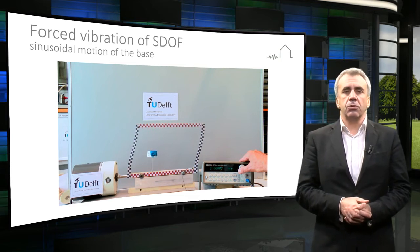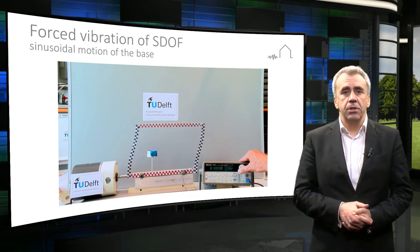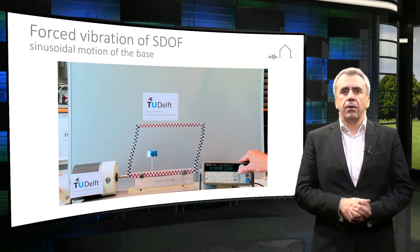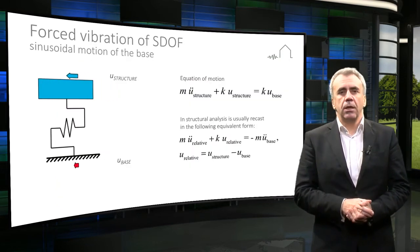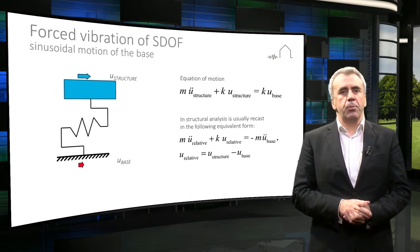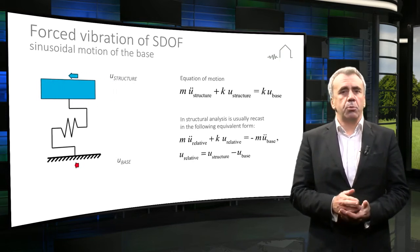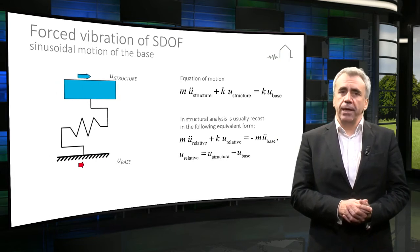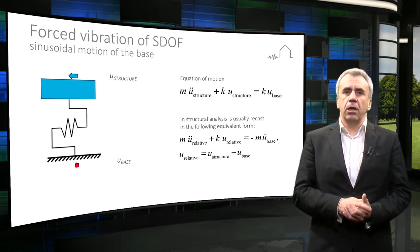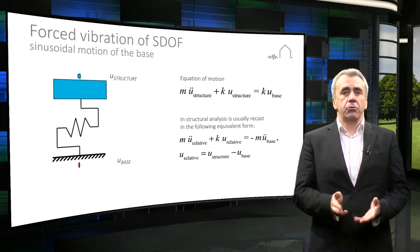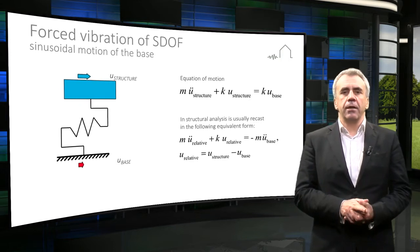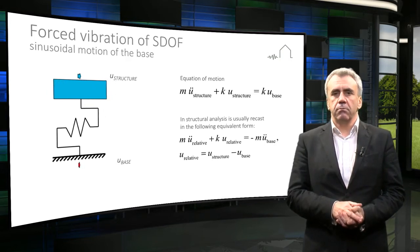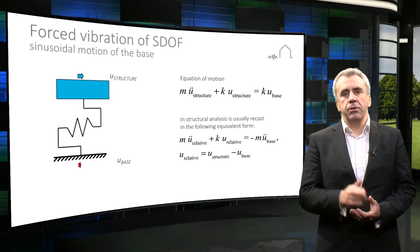It is obvious that the response of the house strongly depends on the frequency of the base motion. The motion of the structure caused by the base motion can be understood in terms of its displacement with respect to a fixed point, or with respect to the moving base. The equations of motion, which are a mathematical representation of Newton's second law, are shown in this slide both in terms of the displacement with respect to a fixed point and in terms of the relative displacement.